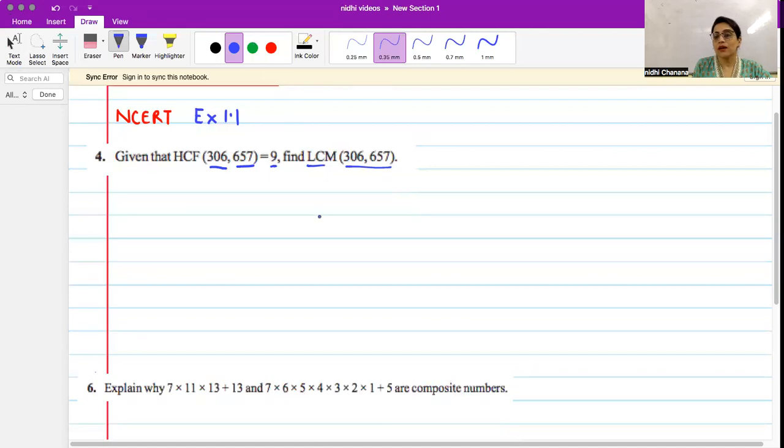Now here you need to know a relationship: when you have two numbers, let's say a and b, and you know their HCF and their LCM, then the product of LCM and HCF should be equal to the product of those two numbers.